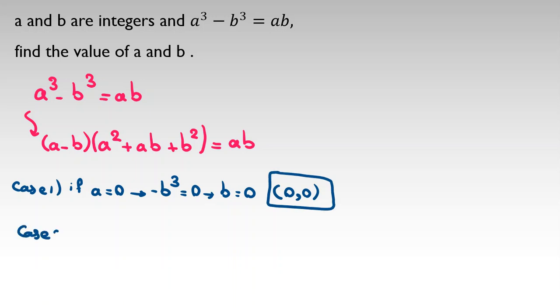Second case, case number 2: if b equals 0, we can conclude similarly we reach a equals 0, and again the solution (0, 0) which we already had.